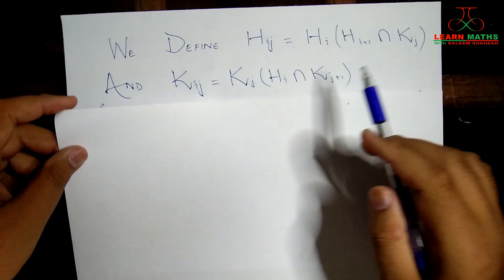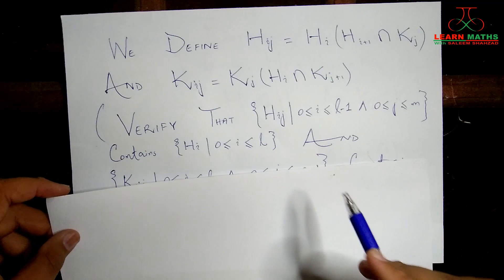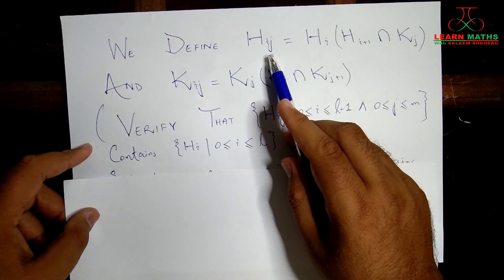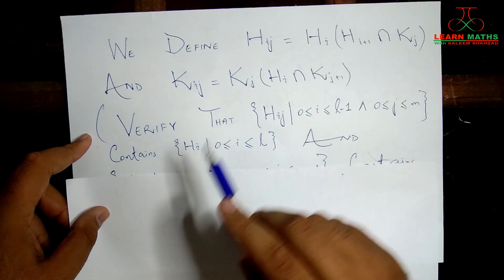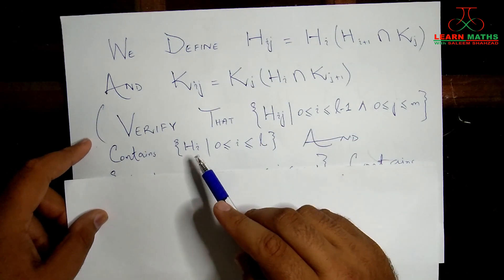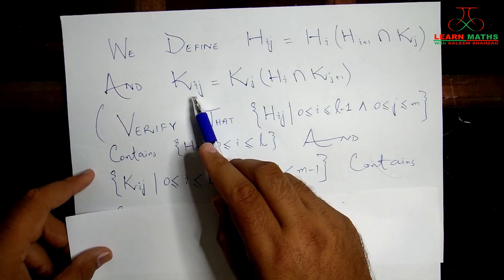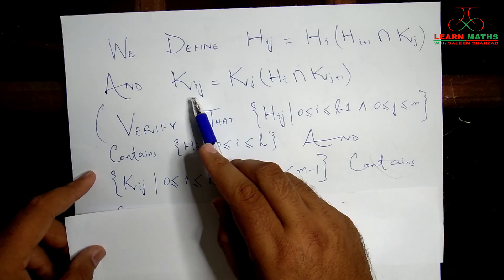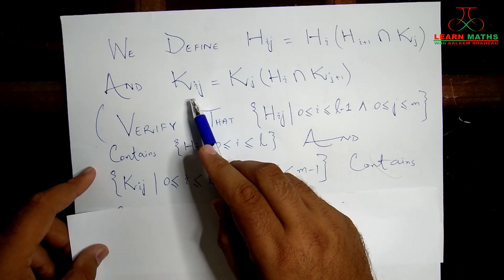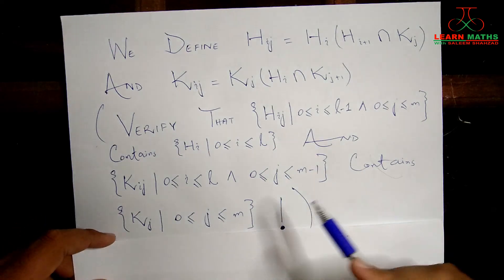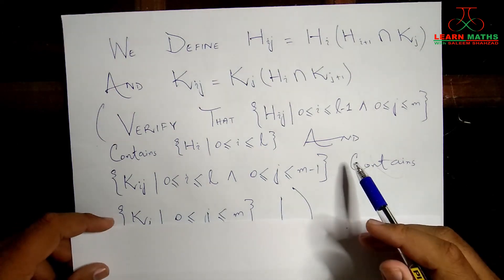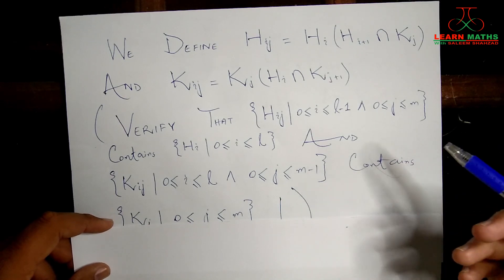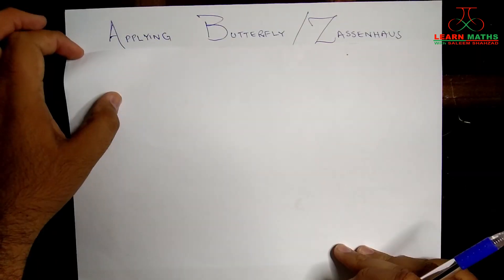I leave it for you to verify that the class of subgroups H_{ij} contains all subgroups originally in the H_i series of G, and that the class K_{ij} contains all subgroups in the K_j series. Please pause this video, check this out, and then move on. Now we are going to apply the famous Butterfly or Zassenhaus Lemma.